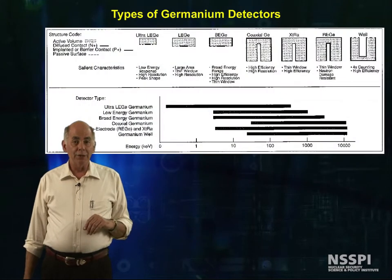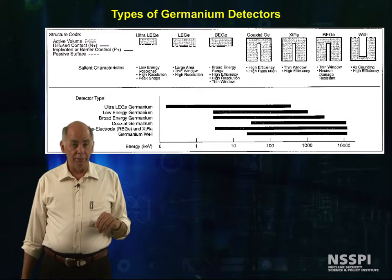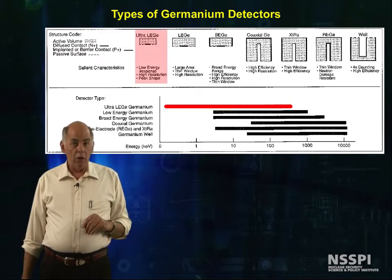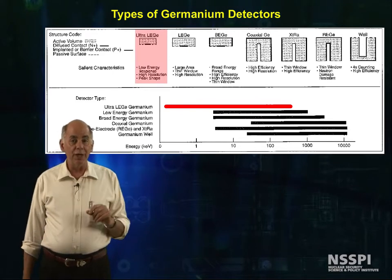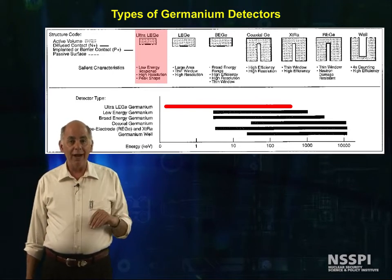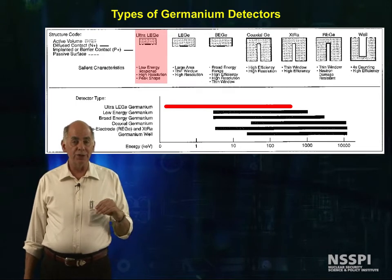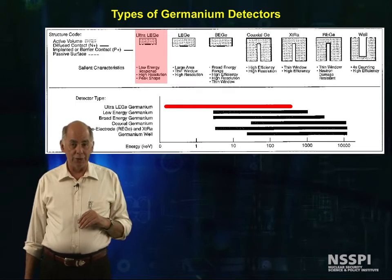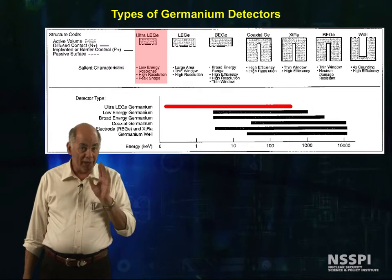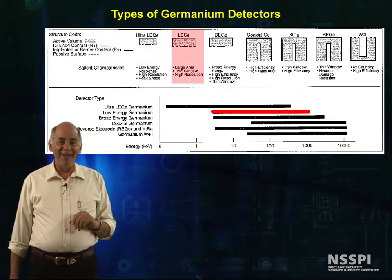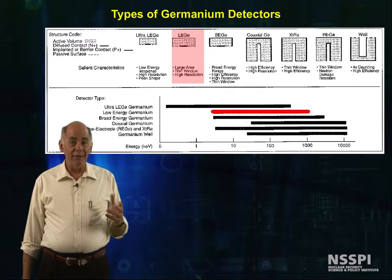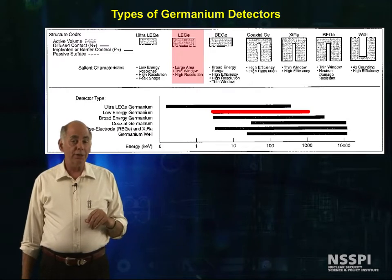Germanium detectors come in a variety of shapes and thicknesses of the p-n junction and of covering materials. Ultra-low energy germanium detectors have ultra-thin junctions and carbon fiber windows, so they can be used in the sub-keV photon range — and bring lots of money if you want one of these. Low energy germanium detectors can have beryllium windows, and the rest use aluminum.